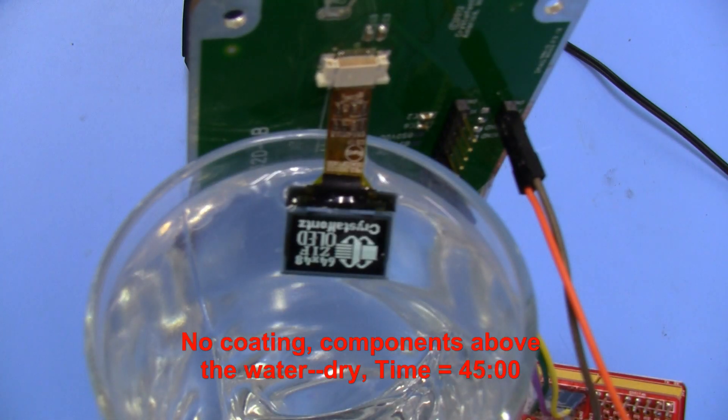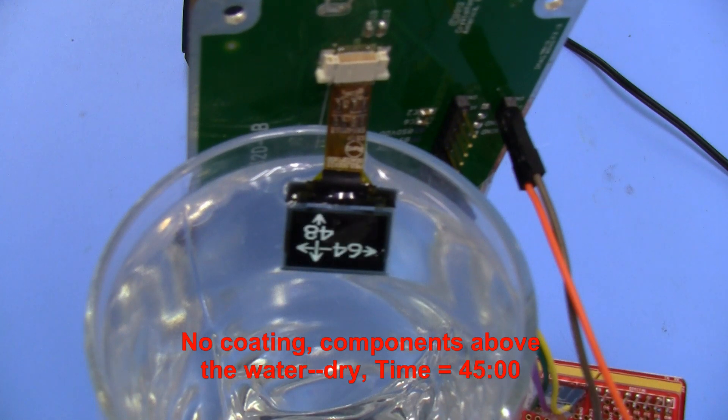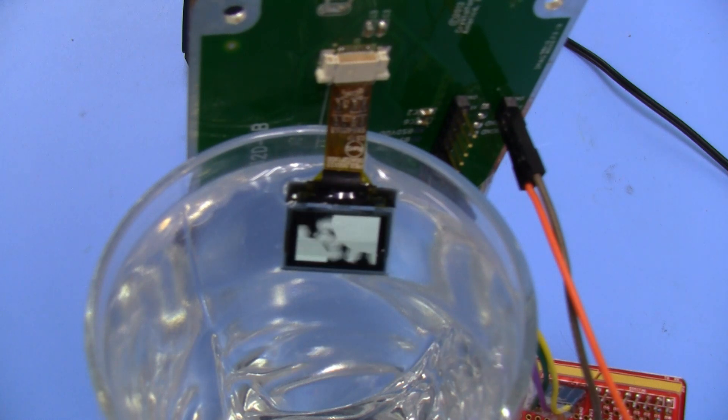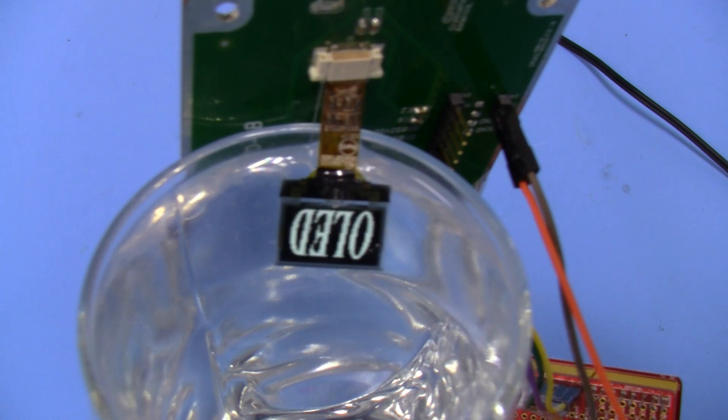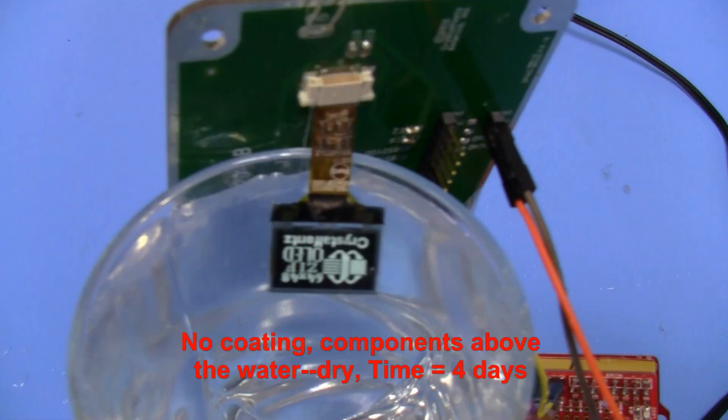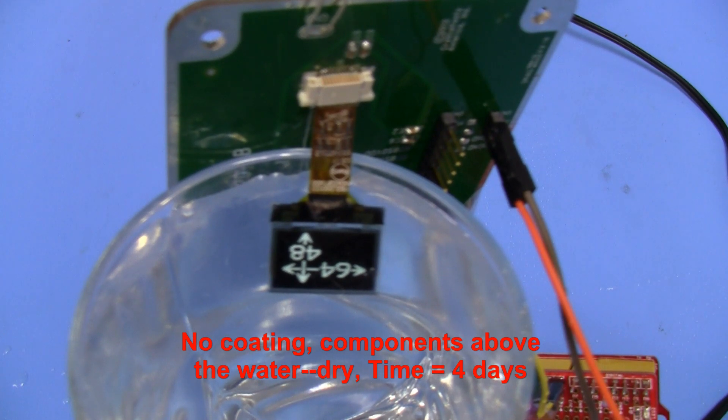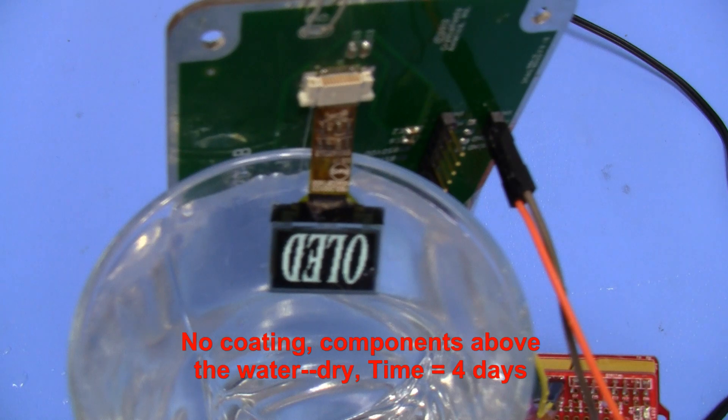This display with the water completely submerging the display but not the components on the tail has now gone about 48 hours and it still looks fine. It's been about another 24 hours, and this sample, which does not have any components submerged but does have the entire display submerged, is still operating correctly. It's been another 24 hours, and this display, as long as the components are not submerged—only the OLED glass and its chip-on-glass and the start of the flex tail is submerged—still going strong.